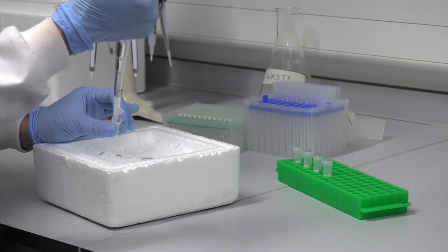Step 6. Remove debris by centrifuging at 13,000 times G for 3 minutes and transfer the supernatant to a screw cap tube.